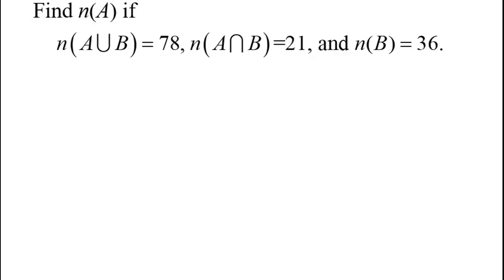So there will be some problems in your MyMathLab homework where you're asked something like this. Find the cardinality of A if the cardinality of A union B is 78, the cardinality of A intersect B is 21, and the cardinality of B is 36.